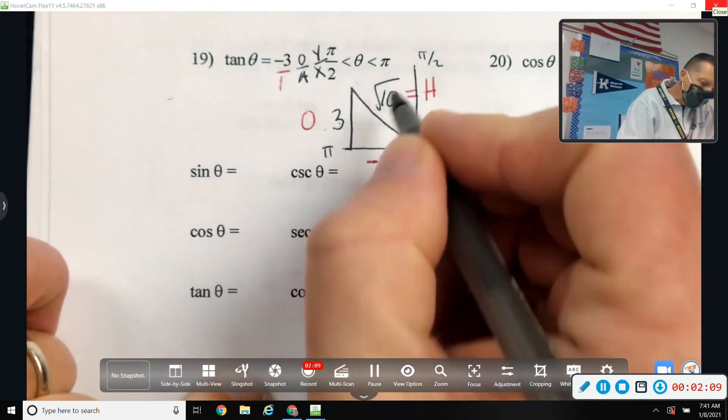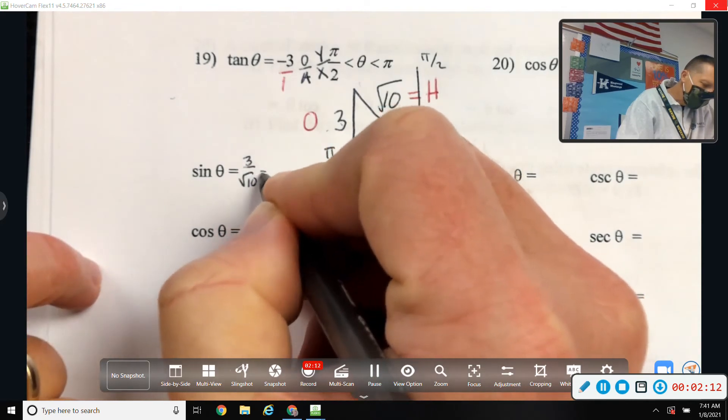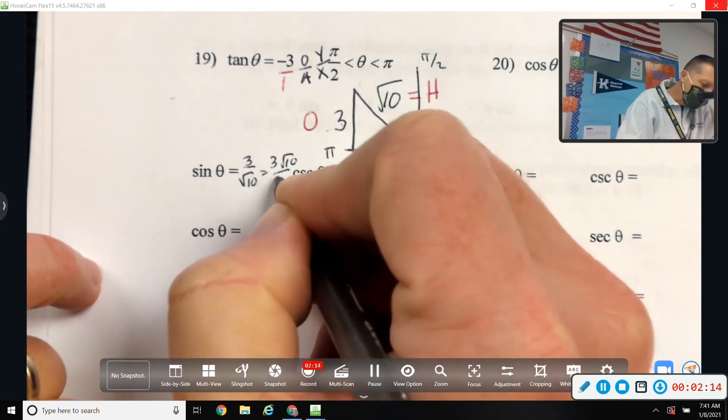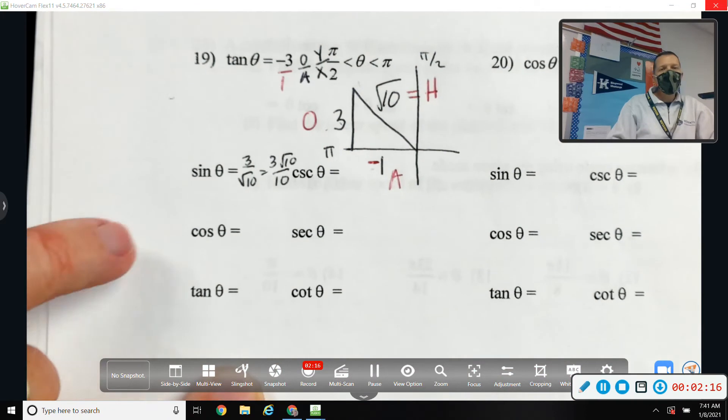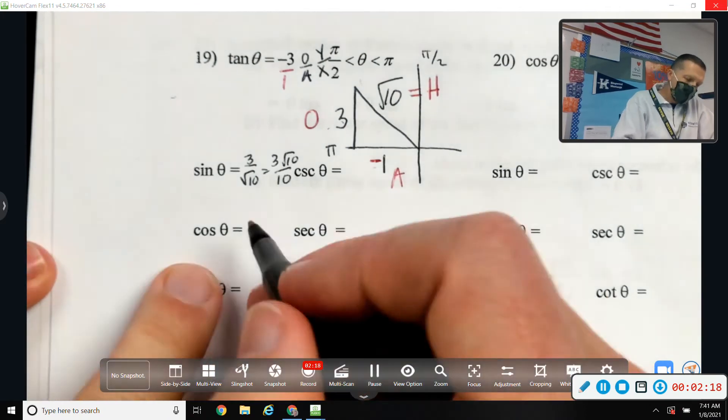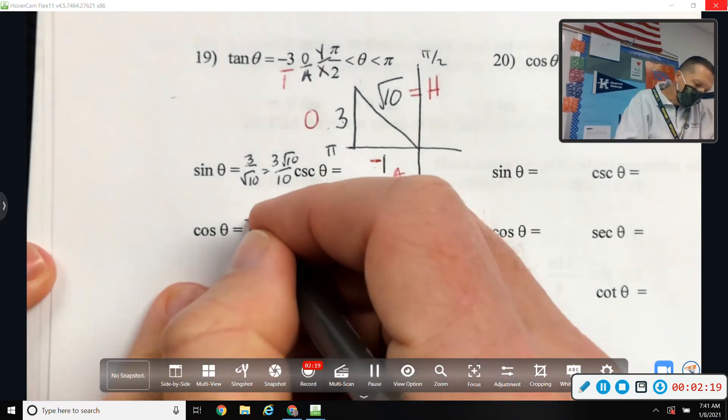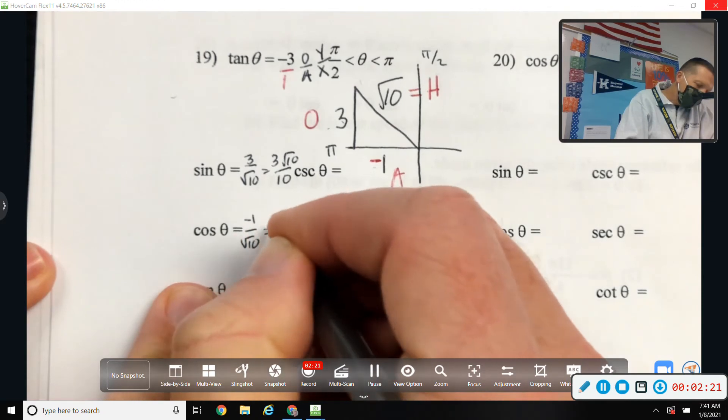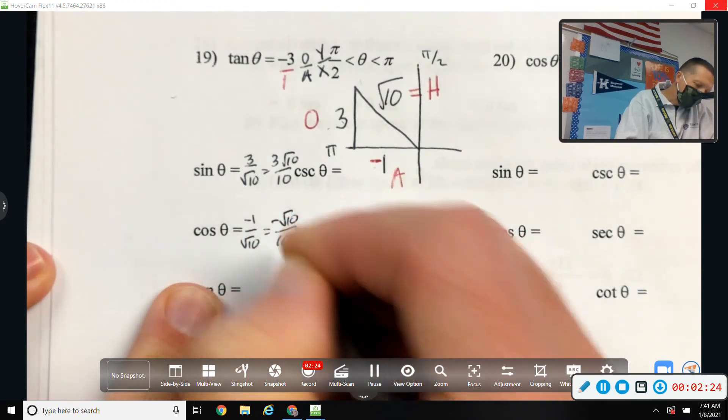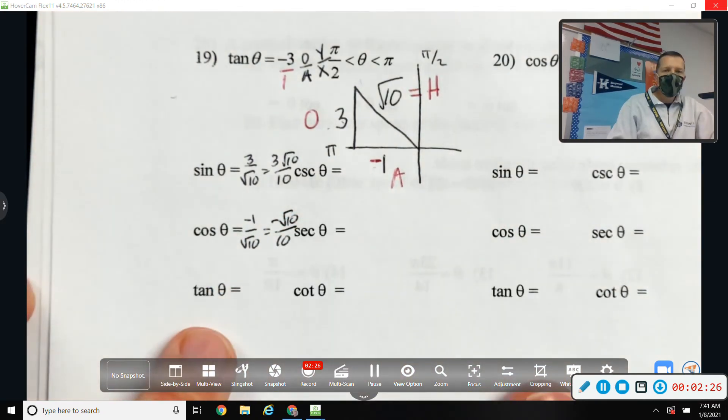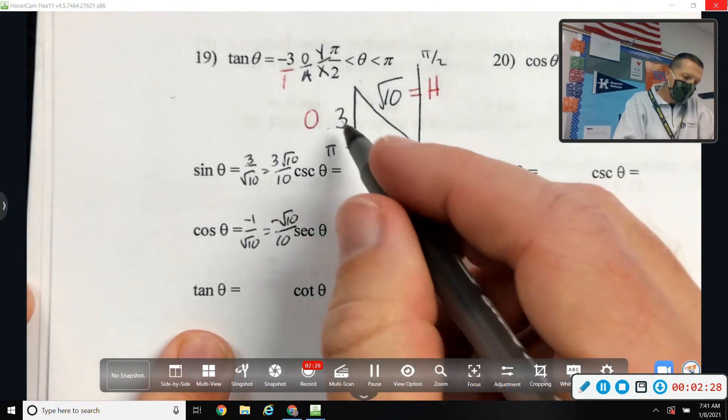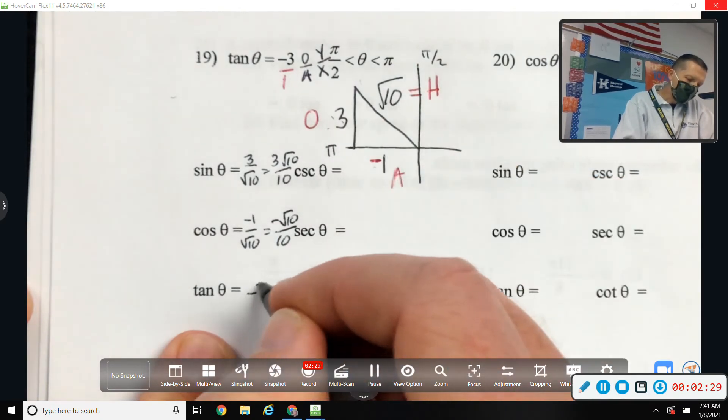Opposite over hypotenuse. But then we have to fix it. Adjacent over hypotenuse. And another one to fix. Tangent. Opposite over adjacent. Negative 3.